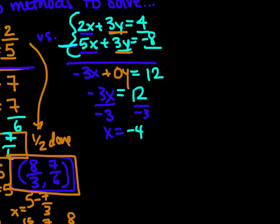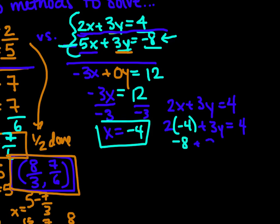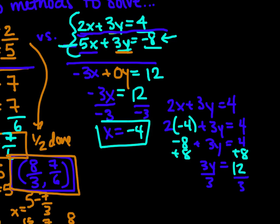Now I need to take this x and put it into one of my two equations. One equation has a negative number and a larger coefficient of 5x, so I'll choose the top equation: 2x plus 3y equals 4. Substituting x equals negative 4: 2 times negative 4 plus 3y equals 4, giving me negative 8 plus 3y equals 4. Adding 8 to both sides: 3y equals 12. Dividing by 3, y equals 4. So my final answer is (negative 4, 4).